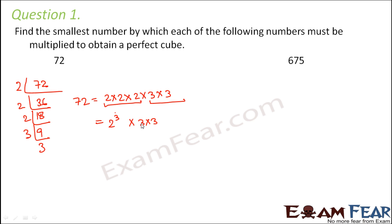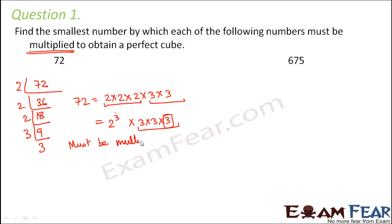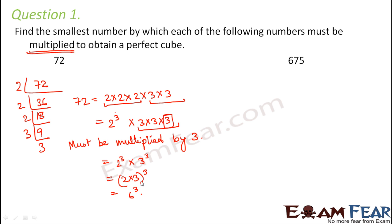In order to obtain a perfect cube, we need to multiply by another 3, because then it would become 3 cubed. So this number must be multiplied by 3. After multiplying by 3, it becomes 2 cubed into 3 cubed, which is equal to (2 × 3) cubed, which is 6 cubed. So this would become a perfect cube.